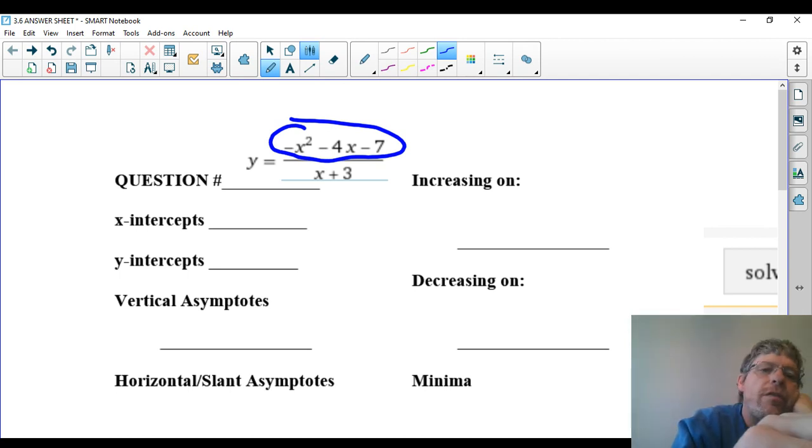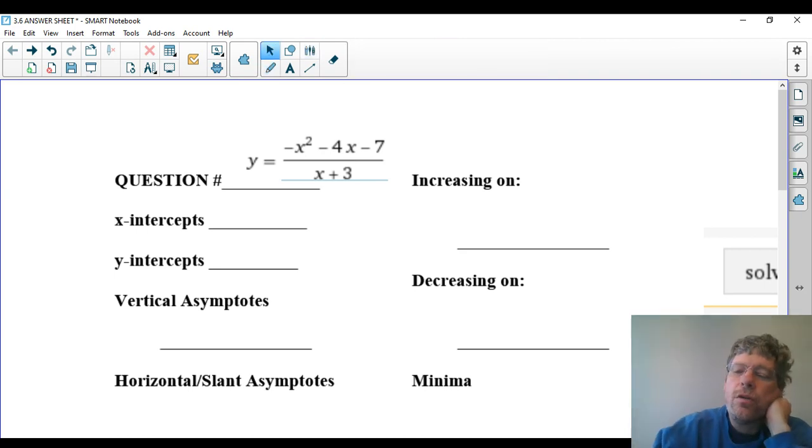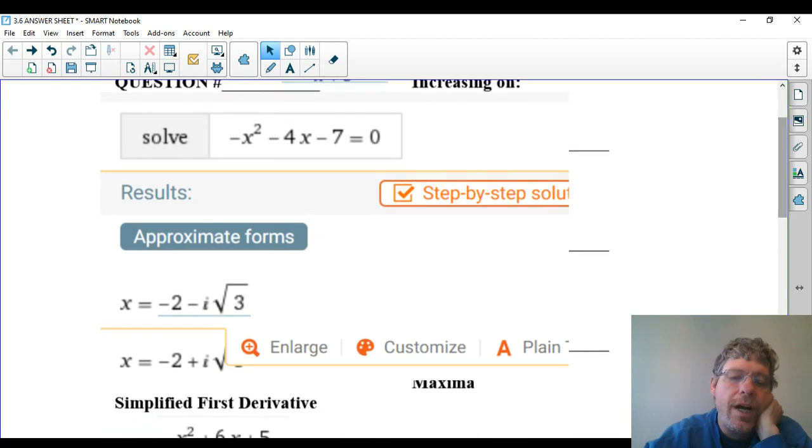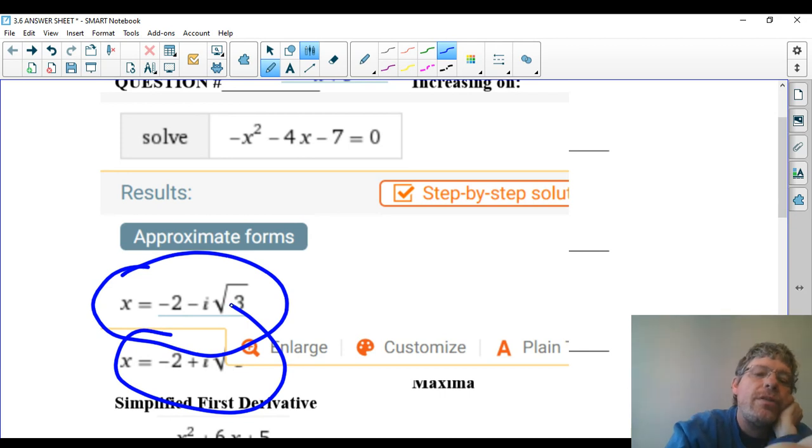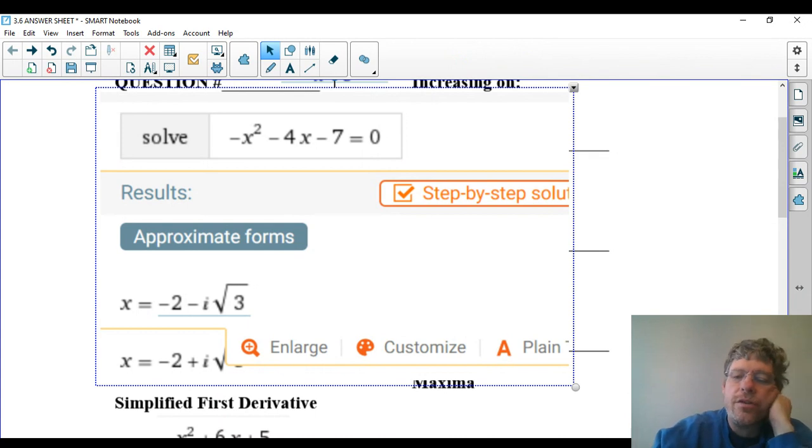I'm using a lot of Wolfram Alpha on this because it makes my life a little bit easier. So what I did, since I'm going to have to graph this function anyhow, I went to Wolfram Alpha and I just asked to solve the top. And you can see the results. When I asked to solve the top, I got these imaginary numbers, which means there is no real solution.